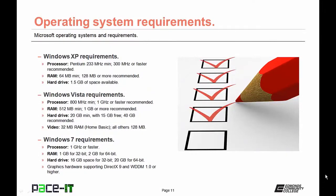As time marched on, so did the requirements. When Windows 7 came out, Microsoft required the processor run at least 1 GHz or faster. For RAM, 32-bit systems needed at least 1 gigabyte and 64-bit needed 2 gigabytes — though doubling those is recommended. Microsoft required 16 gigabytes of hard drive space for 32-bit and 20 gigabytes for 64-bit installation.